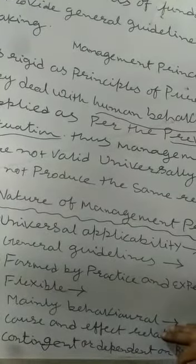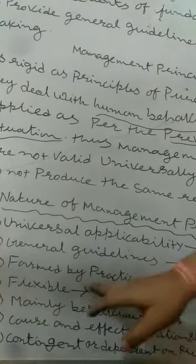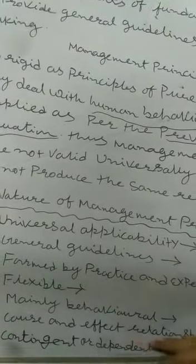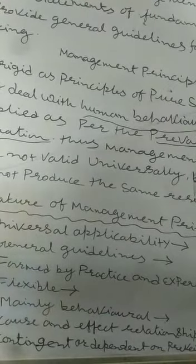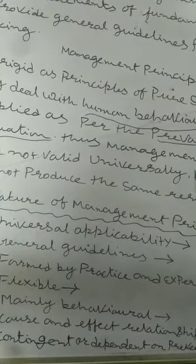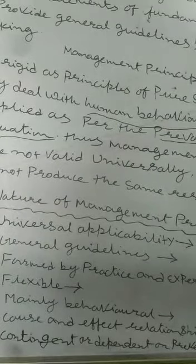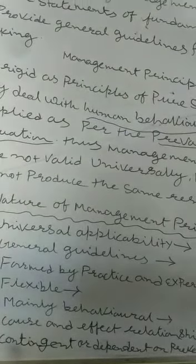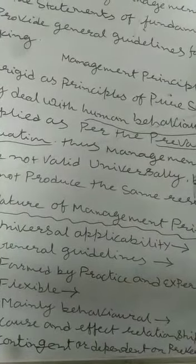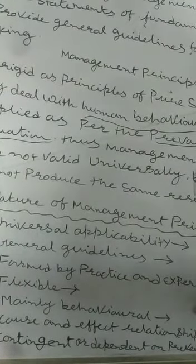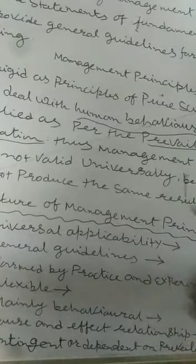Management principles are also practical and can change according to time, place, and work. Next is Cause and Effect Relationship. Whenever we apply a principle of management, we find what is the cause behind the application of that particular principle in a particular situation, and what is the effect of that principle on that particular action. If the cause and effect are found to be right and coordinated, that step is also categorized as a principle of management.